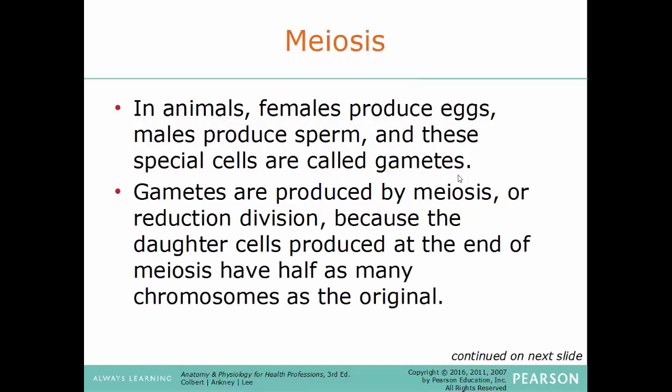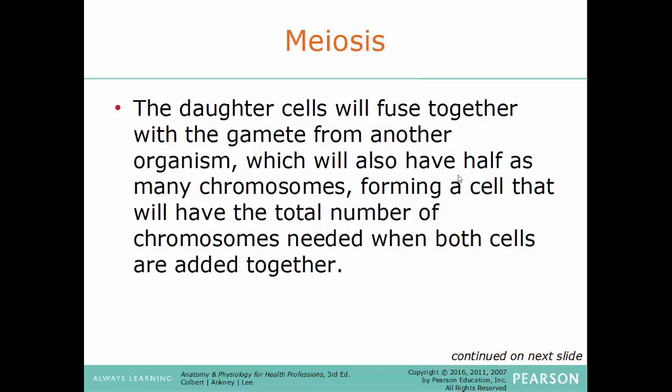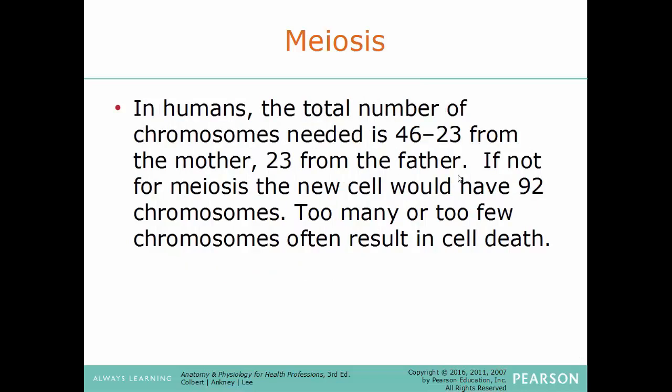Meiosis is related to mitosis but is different in many ways. In animals, females produce eggs and males produce sperm — these special cells are called gametes, another term for sex cells. Gametes are made by a special process called meiosis, also known as reduction division. It's called that because the daughter cells produced at the end of the process have half as many chromosomes as the original. All body cells have 46 chromosomes or 23 pairs, while sex cells only have 23. That's how we get to 46: 23 chromosomes from mom plus 23 from dad.